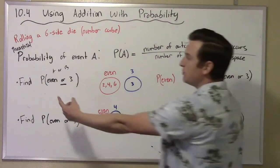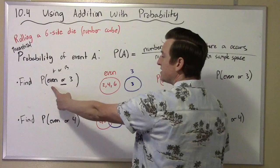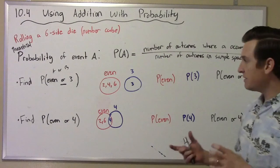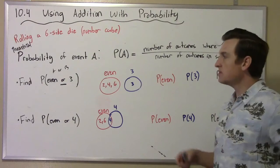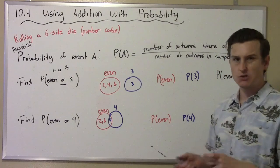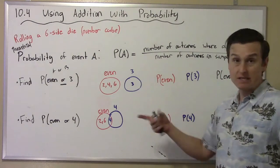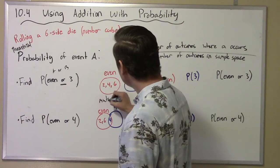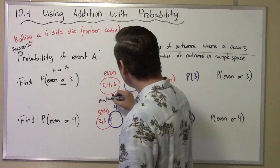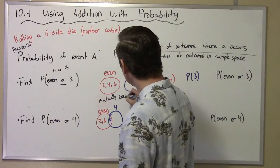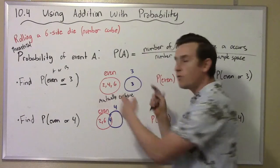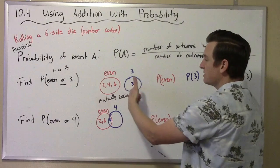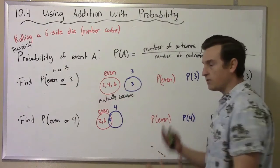In the first example, I want the probability of an even number or a 3. If you think about getting an even number or a 3, those things are mutually exclusive — they can't happen at the same time because 3 is odd. So there's no overlap between them. These are the ways I can get an even, these are the ways I can roll a 3, and they don't overlap.